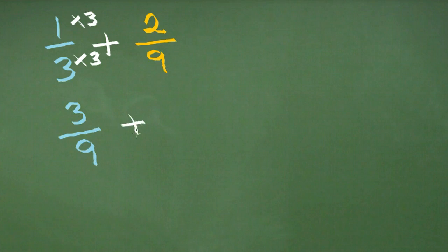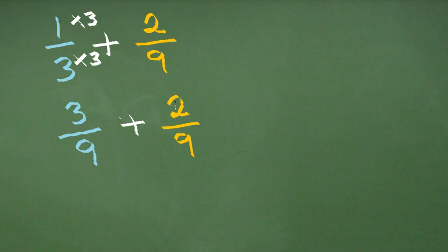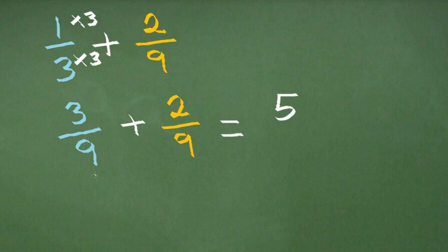We can add that to our two ninths, and we can see now that both parts of the calculation have the same denominator — they both have a nine. Then we complete our calculation: we add three and two on top to give us five, and as per our last example we always keep the denominators the same, so we stick with our nine and get our answer of five ninths.